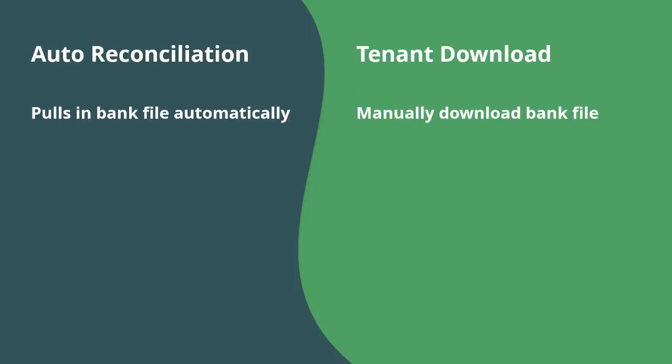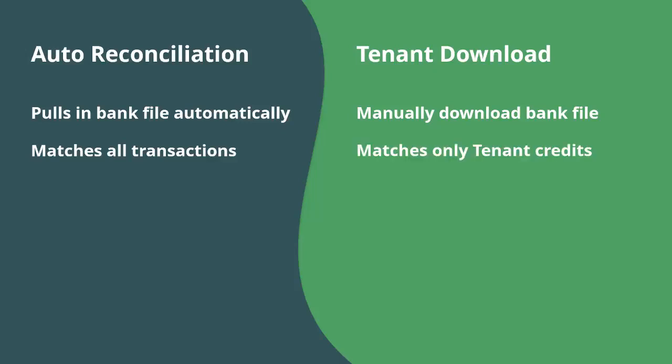Tenant download, on the other hand, doesn't have an auto bank feed, so you can download and process your bank file whenever you like. The auto rec feature matches up all transactions from your trust account — meaning all of your credits and debits — making it easy to reconcile amounts. Tenant download only matches up tenant credits; it doesn't process any other type of credits to your trust account, nor does it process any debits from your trust.